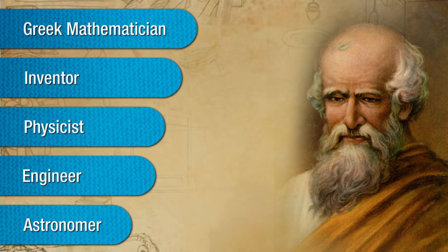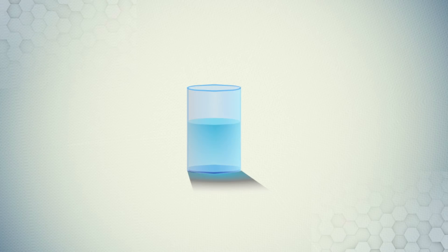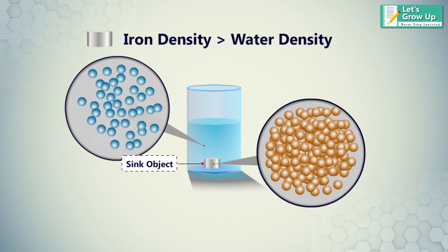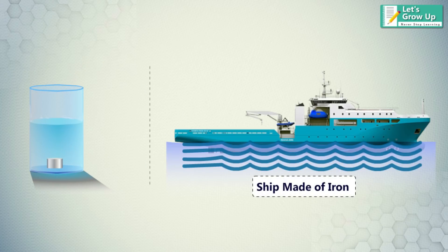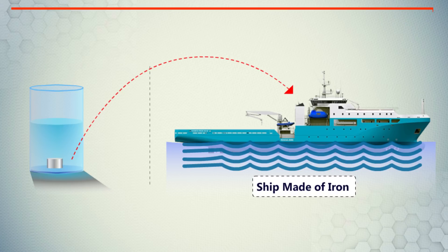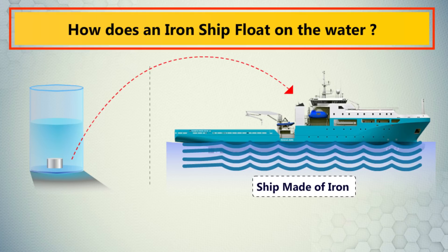Let's understand a common example of Archimedes' principle. If you drop an iron object into a pot of water, it will sink to the bottom. The iron does not float because it has a greater density than water. And yet many ships are made of iron — so how does an iron ship float in water when an iron object sinks?